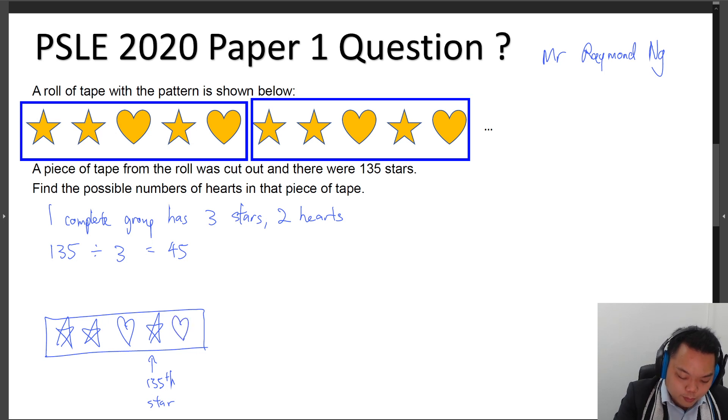So the most traditional way to do this is most of you would have this answer: there would be 90 hearts, because you go by the group definition. So that's one possibility.